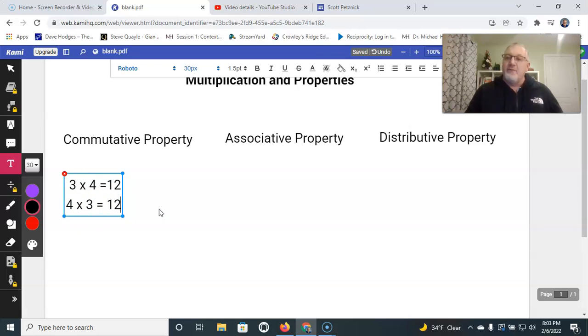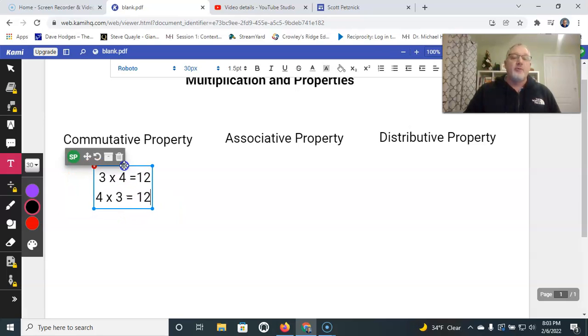Basically it just doesn't matter which way they're done. You can do the three first or you can do the four first. It doesn't matter. You're going to get the same answer. That's what commutative property says.